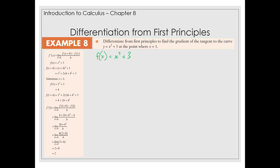Now we're interested in what happens when x is equal to 1, so we find f(1), and that's going to be 1² + 3, which is going to equal 4.